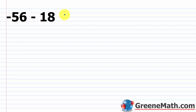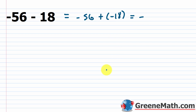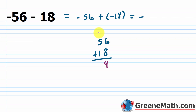On the number line, starting at negative 5, whether subtracting 3 or adding negative 3, I move 3 units to the left: 1, 2, 3, landing at negative 8. Now for negative 56 minus 18: this becomes negative 56 plus negative 18. Both signs are negative, so the result is negative, and we just add 56 plus 18. That gives us 74, so the final answer is negative 74.